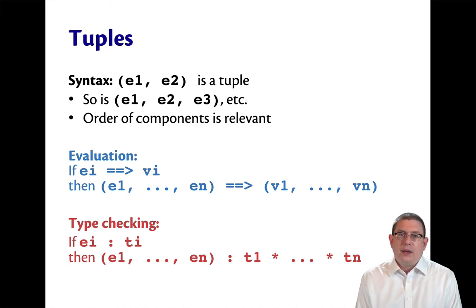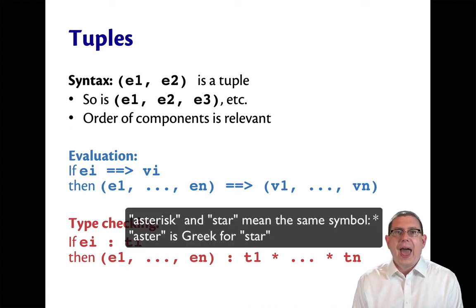And for type checking, each of the components of the tuple needs to have a type itself, and the type of the entire tuple then is written with asterisk.